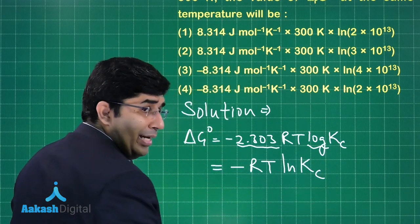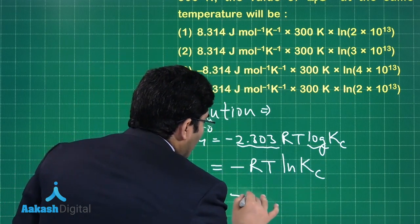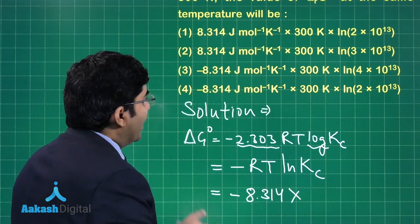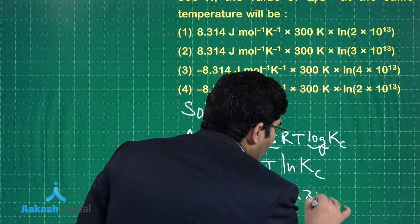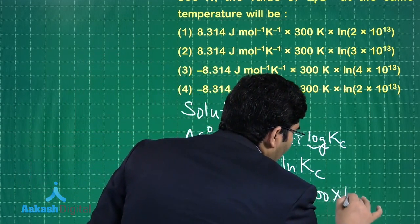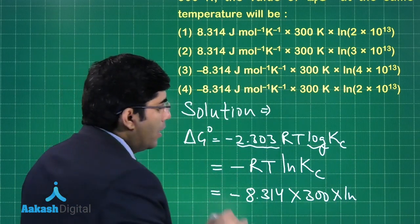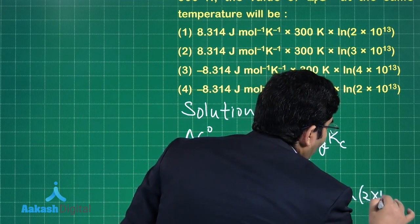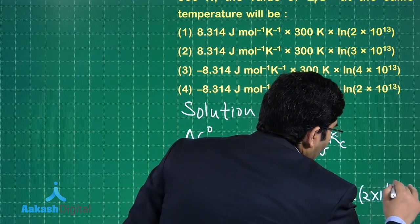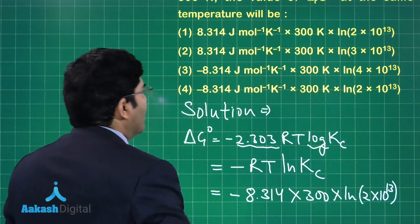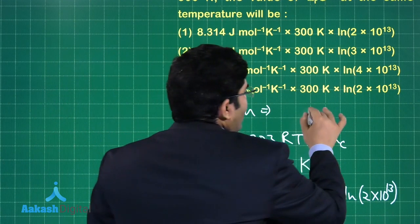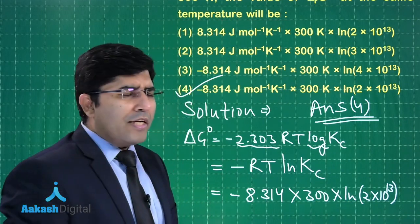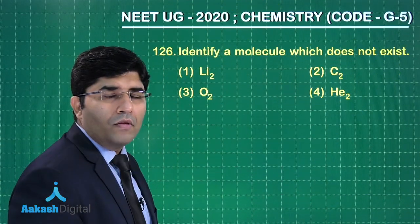Now putting the values, it will be minus 8.314, this is the value of R, multiplied by the temperature that is 300, multiplied by the natural log of Kc, and Kc is 2 into 10 to the power 13. It means that the fourth one is the correct answer.